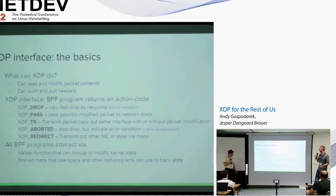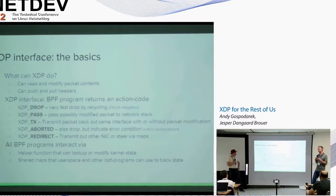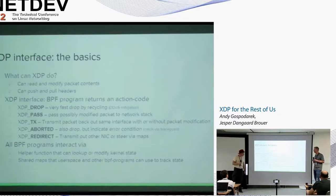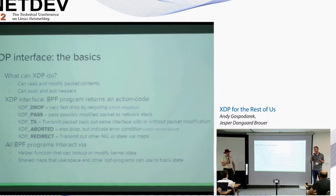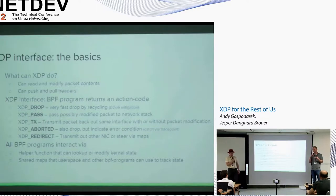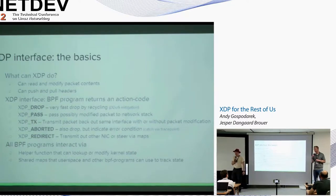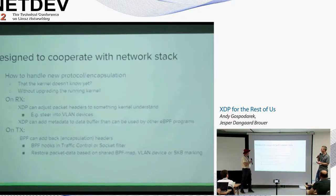All BPF programs interact via helper functions — they can look up and modify kernel state in a tightly constrained and controlled environment; you can't just call any kernel function you want, which is generally a good thing. There are also shared maps to user space that other BPF programs can use to track state. This is the primary communication mechanism: the BPF program comes up, looks at maps, and different programs coordinate with each other through shared map state.